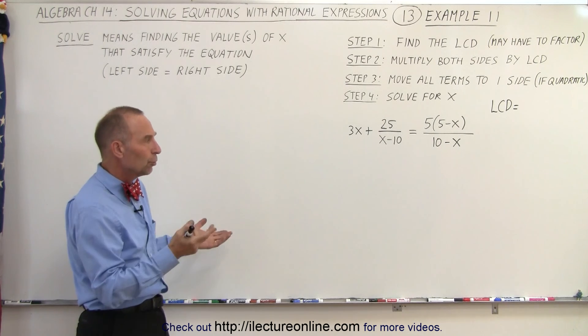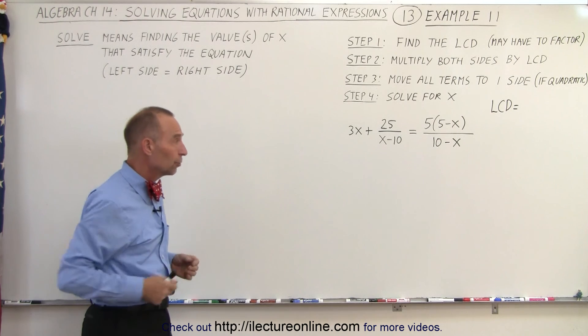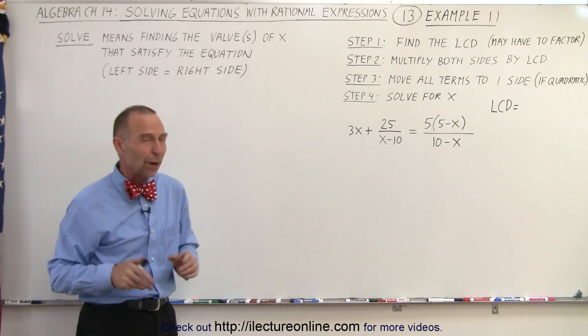but then we also have 10 minus x. So what we could do to find the lowest common denominator is multiply those two together, but that may not be the right way to approach it.